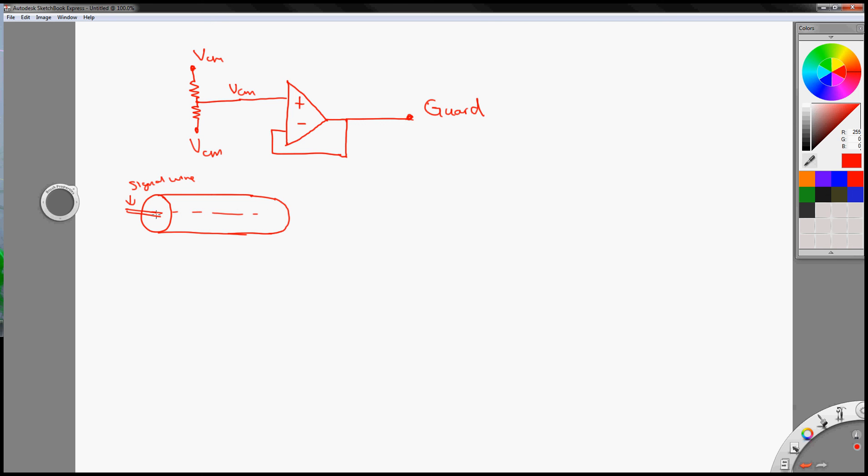So this is your shield. Basically you hook up your guard to this shield, and basically it produces the potential, common mode potential here.